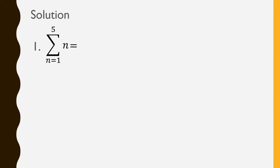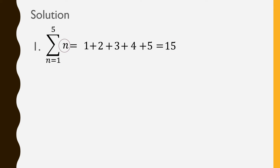The first value of n is 1, the second is 2, the third is 3, the fourth is 4, and the fifth is 5. All you have to do is get the sum of those 5 numbers. We have 1 plus 2 plus 3 plus 4 plus 5, which is equal to 15. In other words, the value of this summation notation is just 15.